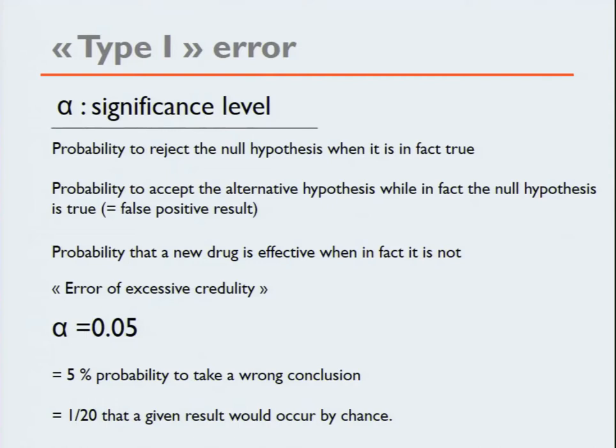If you were to do the experiment again 20 times, you would get the same results once simply by chance, without any effectiveness of your drug. This is the five percent level — you still have a five percent chance that what you see is not true.